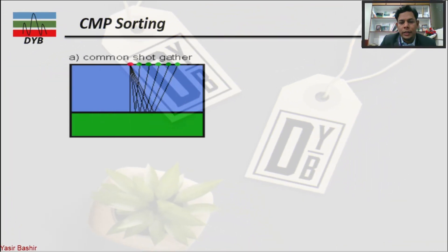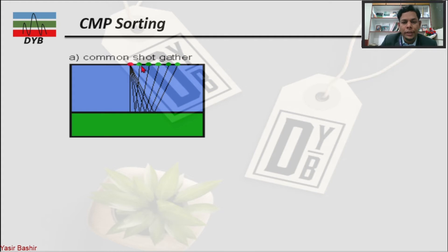Now I will show you a graphical example of these domains. The first one is the shot gather. Shot gather is with respect to the shot — let's say we have a shot here, we fire a shot, then there are multiple receivers. All the waves go into the subsurface, hit the reflector, and come back to the receiver — geophone in case of land and hydrophone in case of marine. All the gather with respect to this shot point is called shot gather.